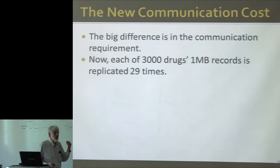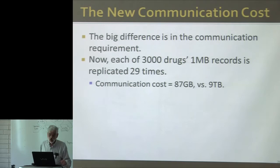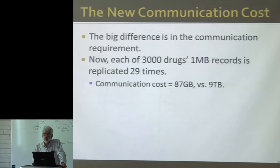The communication is very different. You still have 3,000 drugs at a megabyte each, but instead of replicating each record 2,999 times, it's just 29 times. The communication cost is 87 gigabytes — about a hundred times less than the nine terabytes the first algorithm required. That was good enough that they were able to get the job done in about an hour.